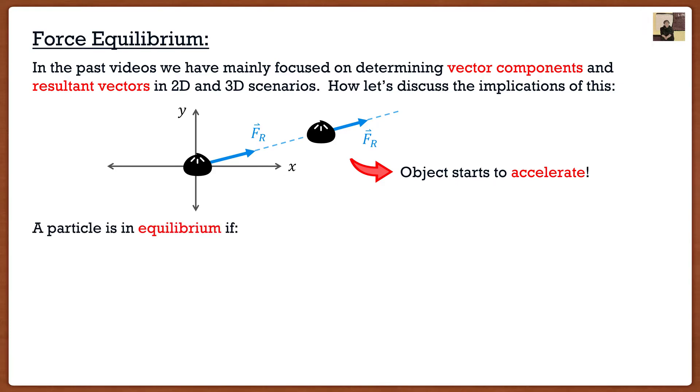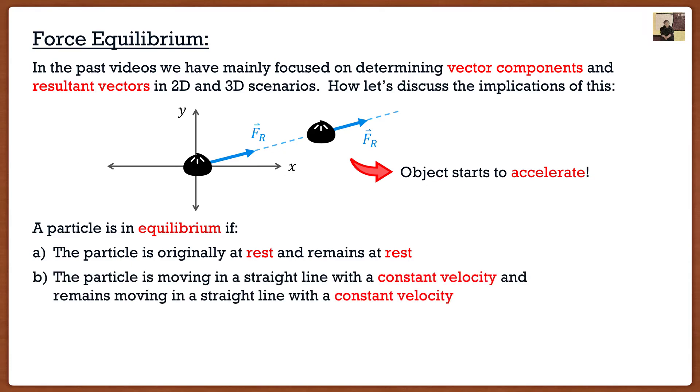So this brings us to the idea of equilibrium. A particle is in equilibrium if one of two things: first, the particle is originally at rest and remains at rest, or the particle is moving in a straight line with a constant velocity and remains moving in a straight line with a constant velocity.